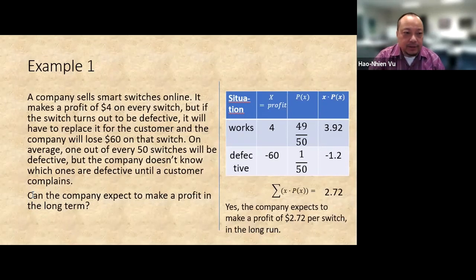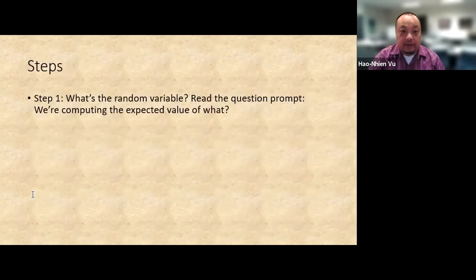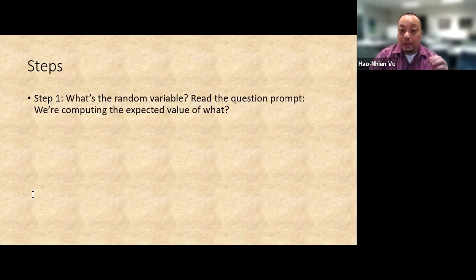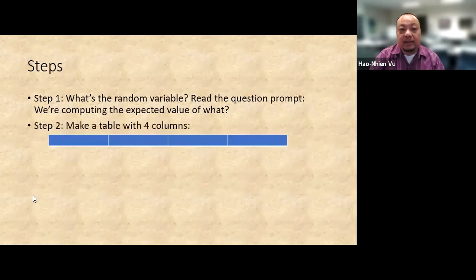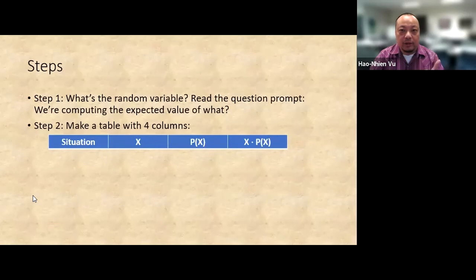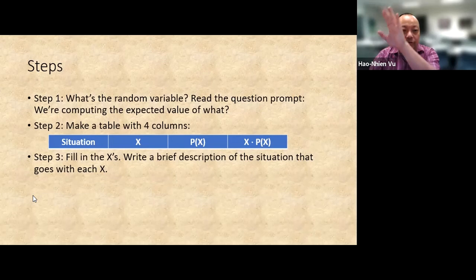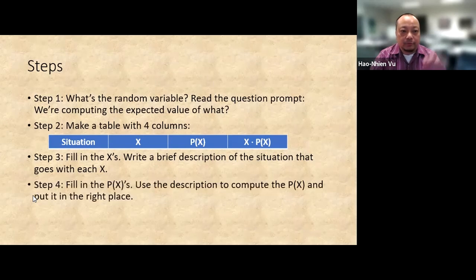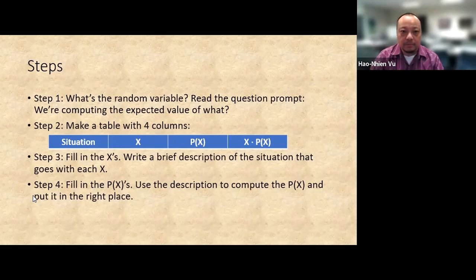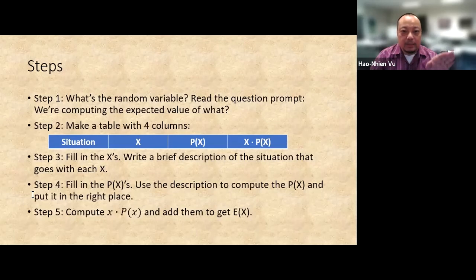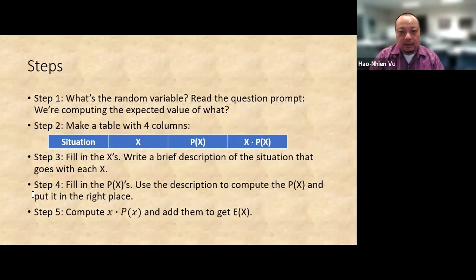Step one, determine what's the random value. To answer that, read the question prompt. What is it asking us to compute? We're computing the expected value of what? Step two, make a table with four columns: situation, x, p of x, and x times p of x. Step three, fill in the x's, but also a brief description of the situation that goes with each x. Step four, fill in the p of x's. Use the description of the situation to compute the p of x and put it in the right place. Step five, compute x times p of x and then add them together to get expected value of x.